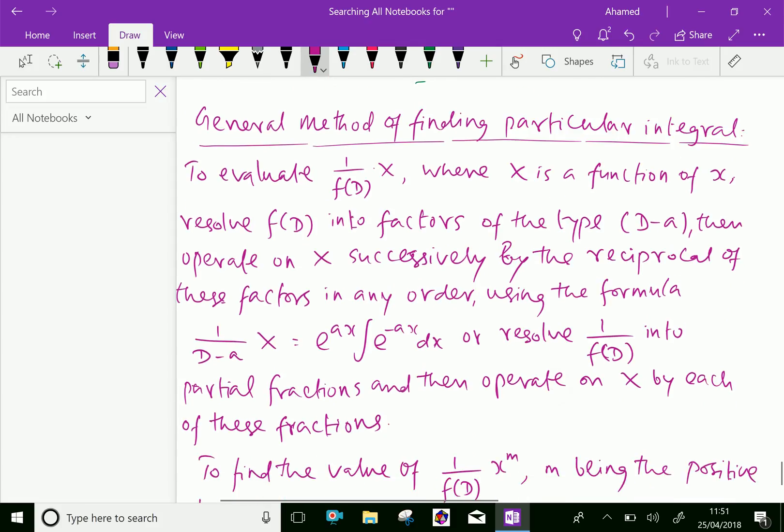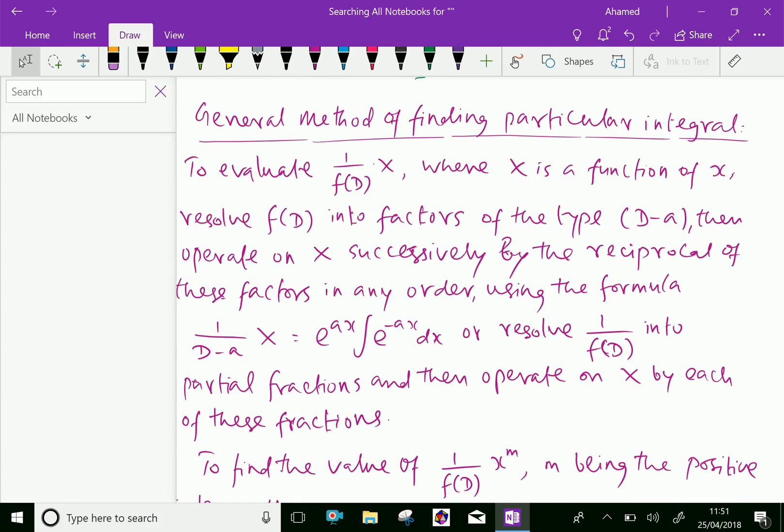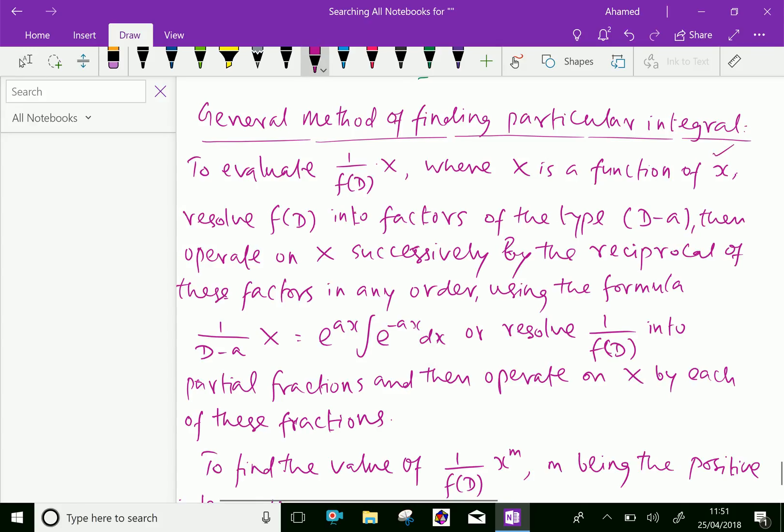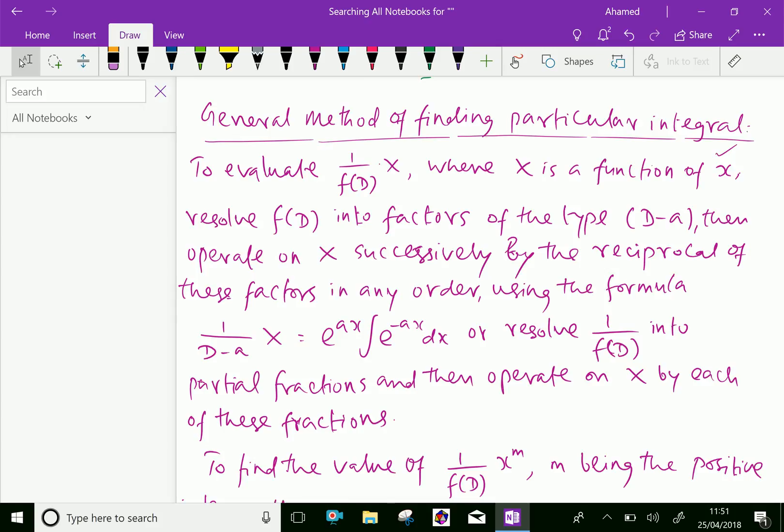General method of finding particular integral: To evaluate 1 over f of D times x, where x is a function of x, resolve f of D into factors of the type D minus a, then operate on x successively by the reciprocal of these factors in any order, using the formula: